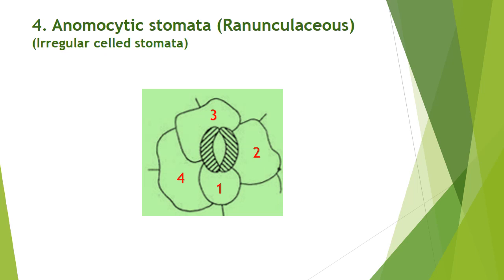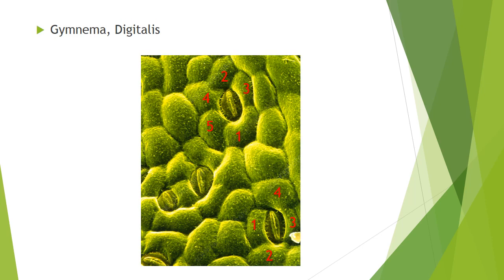The next type is anomocytic stomata, also known as ranunculaceous stomata or irregular-celled stomata. A specific arrangement is not found here, and there are more than three epidermal cells or subsidiary cells present around the guard cells. In the picture, there are four epidermal cells with no specific arrangement around the subsidiary cells. This type of stomata is found in Gymnema or Digitalis plants, with four or five subsidiary cells present around the stoma irregularly arranged.